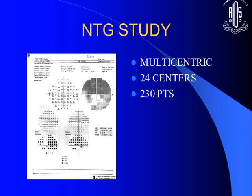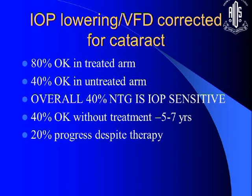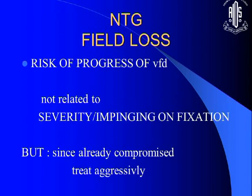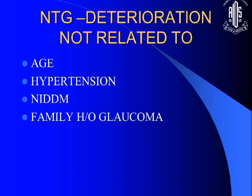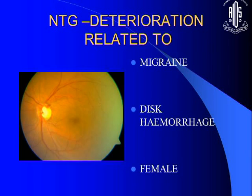The NTG study taught us important things. Almost 57% of patients could be managed by laser or medicines alone. When pressures were reduced by 30%, 80% of NTG patients were okay — but 20% still progressed. On the other hand, in untreated NTG, 40% of patients remained stable anyway — that is a huge proportion. Risk of progression is not related to field severity, age, hypertension, diabetes, or family history. It is related to vascular disease, and specifically to migraine, disc hemorrhage, and being female.